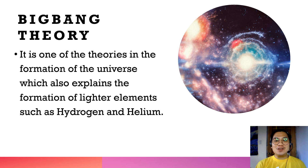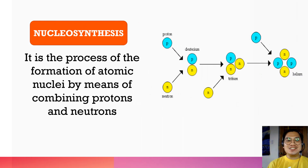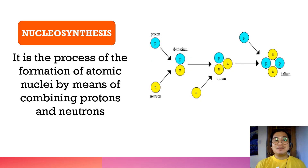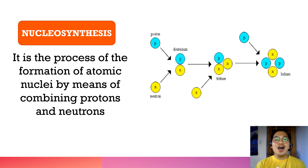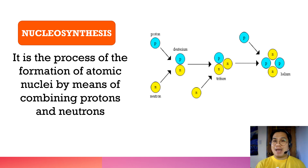The second terminology is nucleosynthesis. Nucleosynthesis is the process of formation of atomic nuclei by means of combining protons and neutrons. As you can see in the illustration, that is when nucleosynthesis happens.